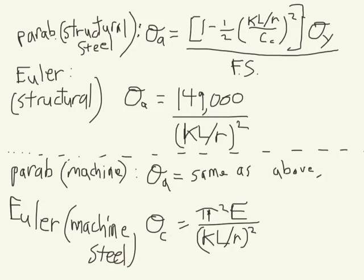And apparently here we're dealing with machine steel. So we would use one of these bottom two equations for machine steel. If we end up using the parabolic equation, we could just use the parabolic equation for structural steel because they're really not essentially any different. They're just expressed differently.